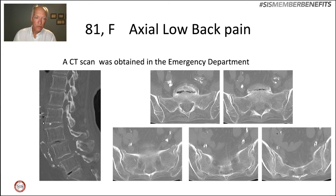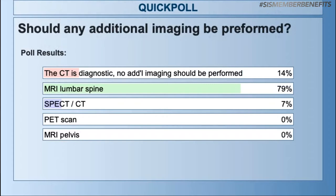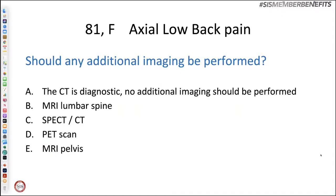Having looked at those images, let's answer the question. Choice A: the CT is diagnostic, no additional imaging should be performed. B: lumbar spine MRI. C: SPECT CT. D: PET scan. E: MRI of the pelvis. Here are the results — most of you wanted an MRI of the lumbar spine, and that is indeed what happened next.